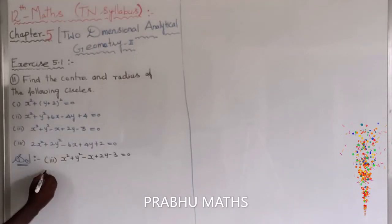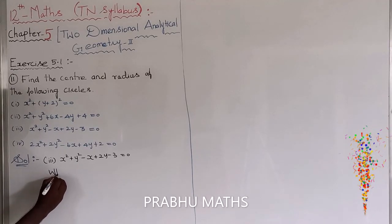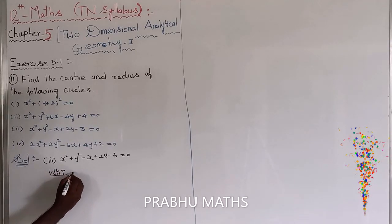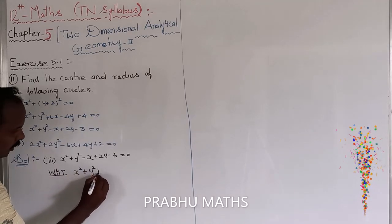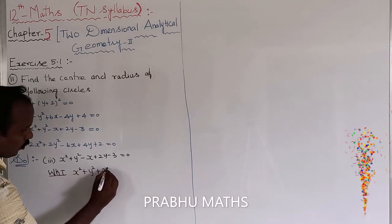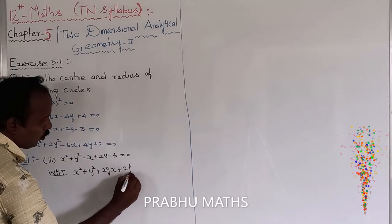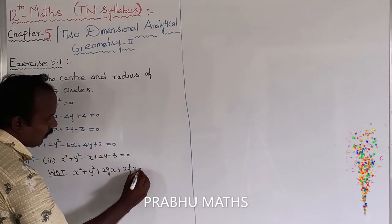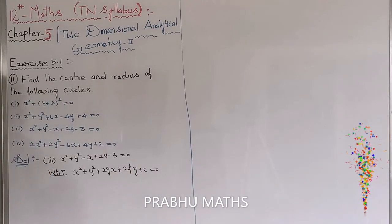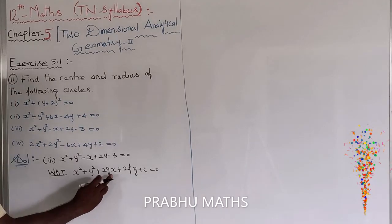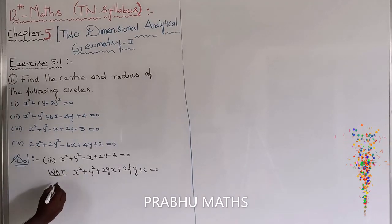We know that the general form of the circle is: x squared plus y squared plus 2gx plus 2fy plus c equal to 0. First of all, compare the coefficients on both equations.